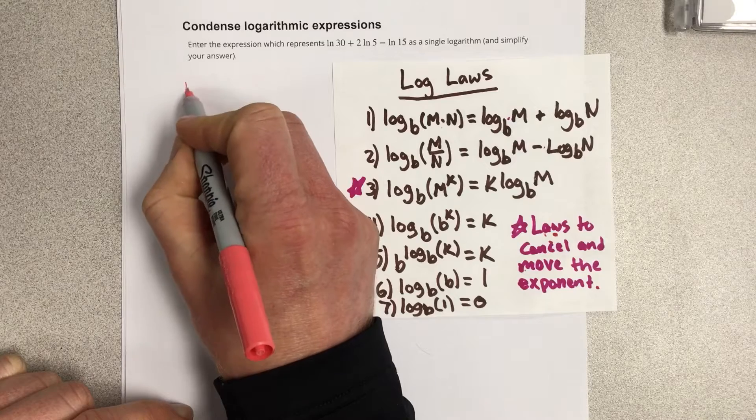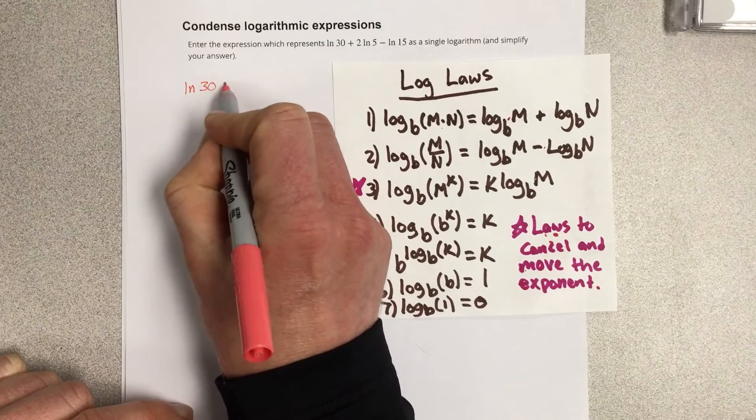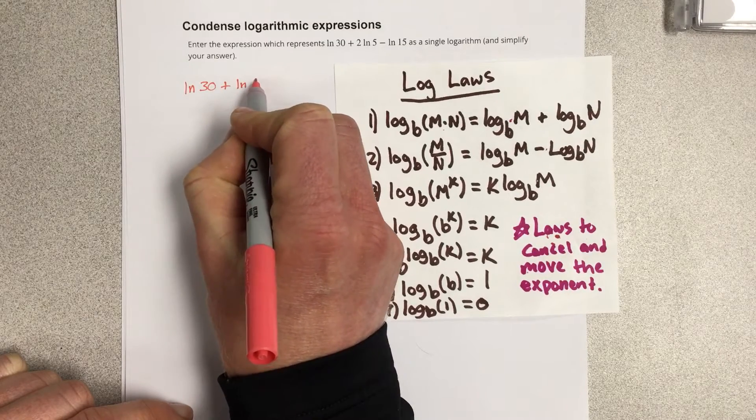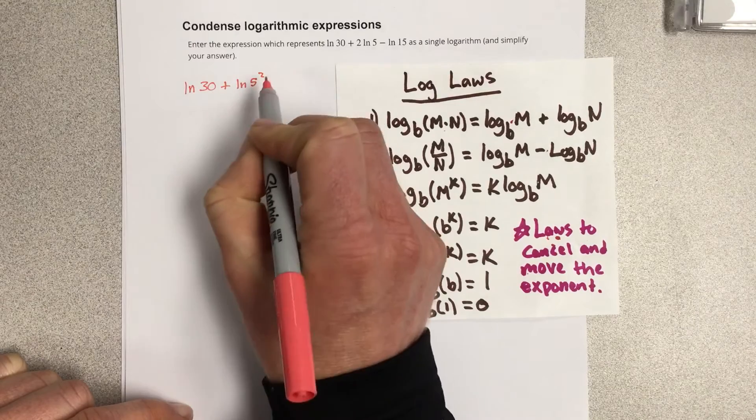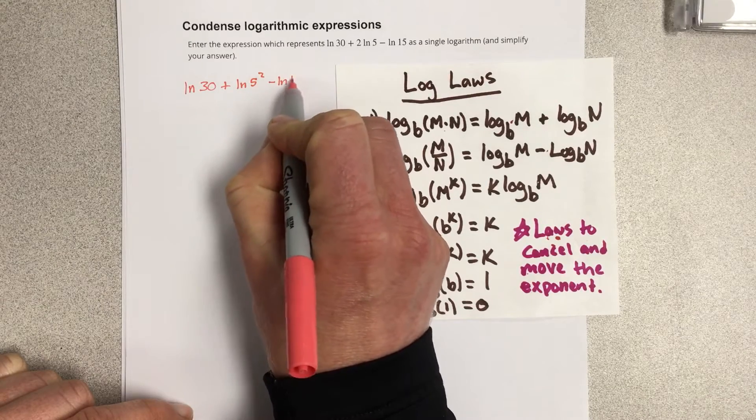So we're going to say natural log 30 plus natural log 5 squared minus natural log 15.